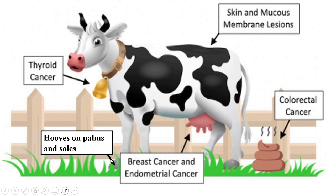The second feature is hoops on the palms and soles of this cow. In Cowden Syndrome, patients may develop callus-like lesions on the palms and soles called palmoplantar keratosis. The stripes on the cow's back help us remember that skin and mucosal lesions are common presentations in Cowden Syndrome, including acral keratosis — remember the 10-acre land.